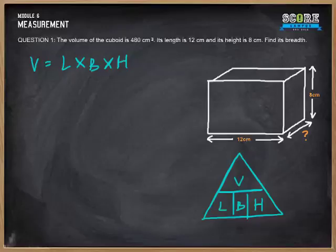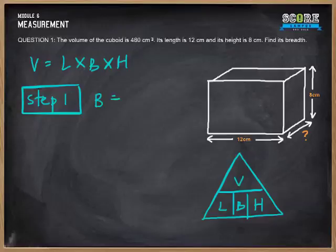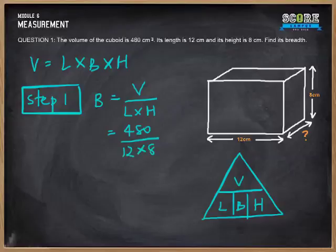Now that we know how it works, let's move to step 1. Let's set up the formula. Breadth equals volume over length times height. Let's plug in the figures: 480 over 12 × 8, and the answer you get is 5 cm. Do the mathematics and you get the answer, which is 5 cm. And that's your final answer.